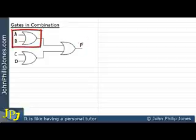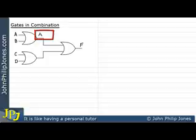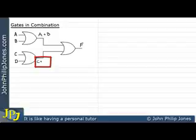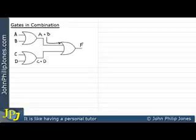If we come to this particular gate here, what I can write is A or B, because that is the boolean representation for the output of an OR gate based on its inputs. If I come down here, the output here would be C or D for this particular OR gate. This boolean expression acts as the input to one of the inputs on the two-input OR gate, and this one acts as the input to the other.